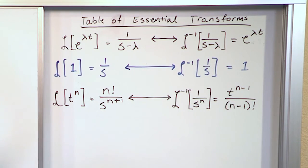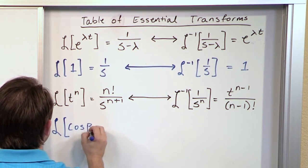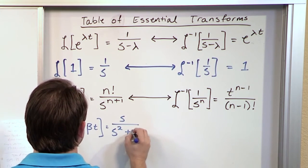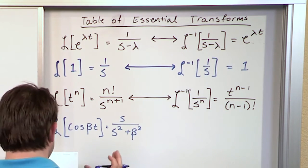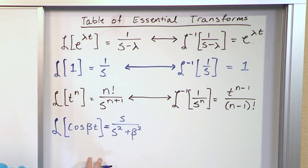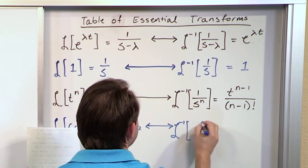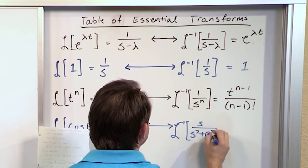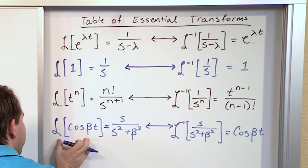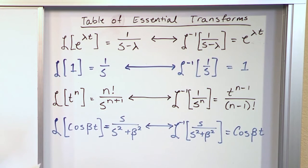The Laplace Transform of cosine(βt) is s over (s² + β²). And by the reversibility of the transform, we draw a double arrow: the inverse Laplace Transform of s over (s² + β²) is equal to cosine(βt). Transforming from t gives you s; inverse transforming from that same function of s recovers your function of t exactly.